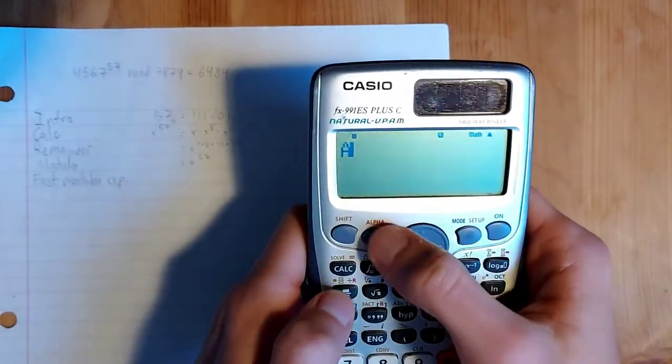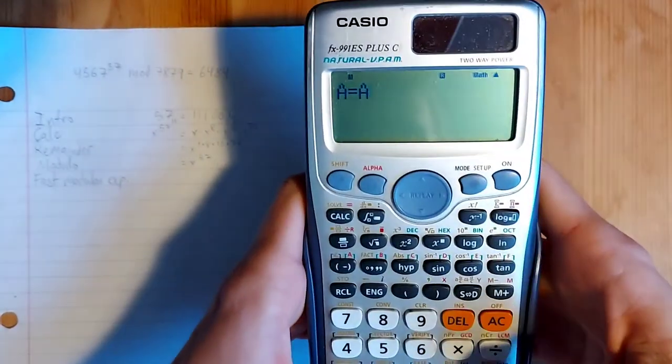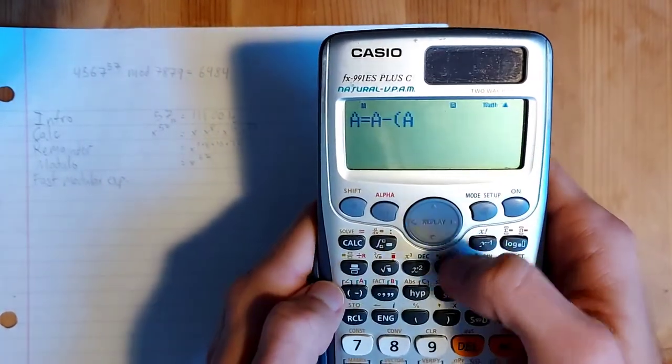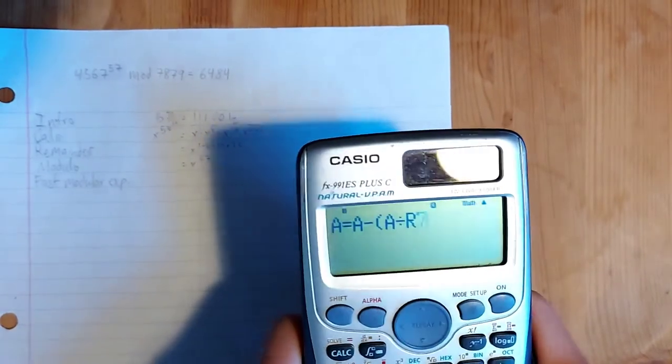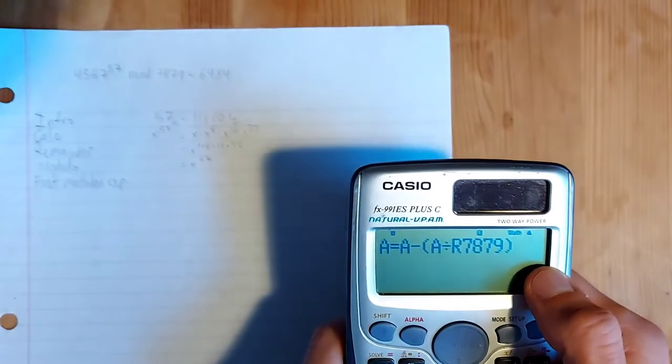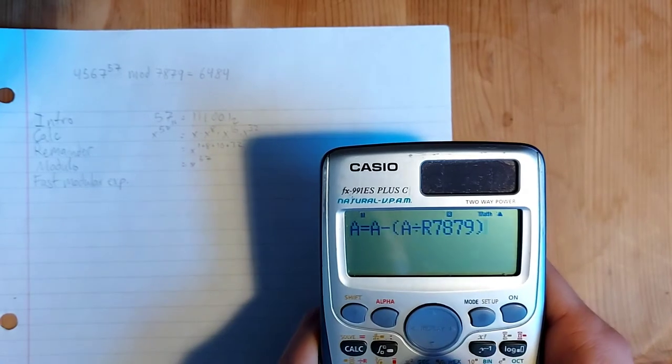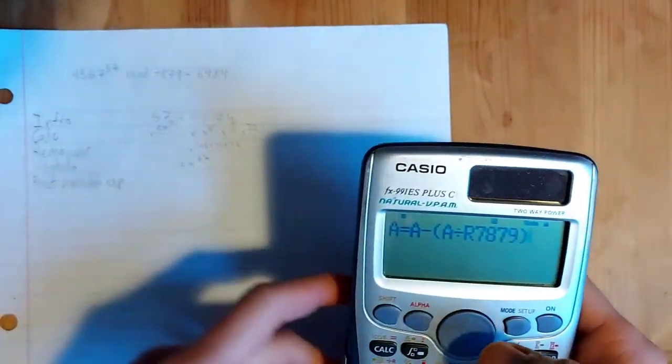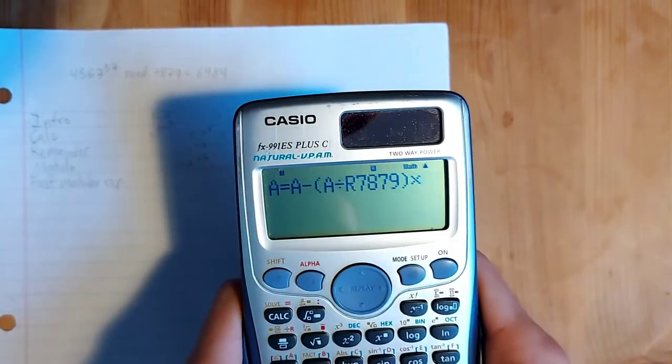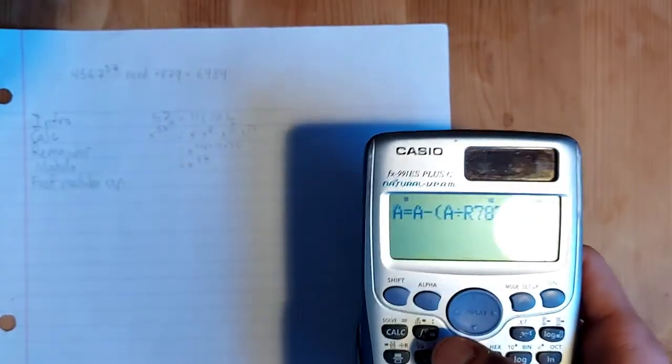So I'll do a minus a integer divide, and I'm just going to directly put in 7879, since we're going to be doing all of these operations with 7879 as the, I don't even know what that's called, the thing that you're modding by. And then times 7879. So yeah, now we don't have to put in 7879, and it won't ask us for it every time.